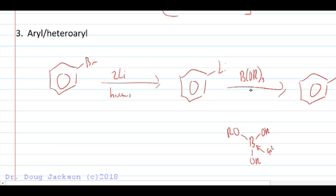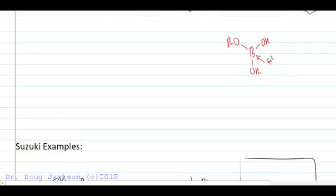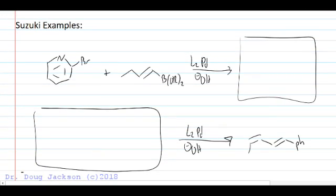Let's look at a couple of examples of how the Suzuki might be used here. We want to couple this substituted pyridine with the alkene that we see here as the organoborane. We've got our catalyst and hydroxide, so we're ready to go.